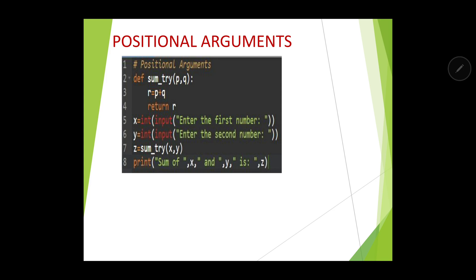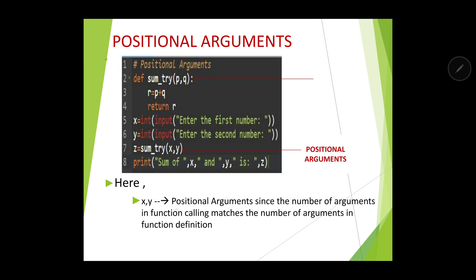So here x and y are positional arguments because we have two arguments in the function call and two parameters in the function definition — both are matching. x comma y are positional arguments since the number of arguments in function calling matches the number of arguments in the function definition. Not only the number — the order should also match. Here x corresponds to the first number p, and y corresponds to the second number q, so the order is also matched. This is all about positional arguments.